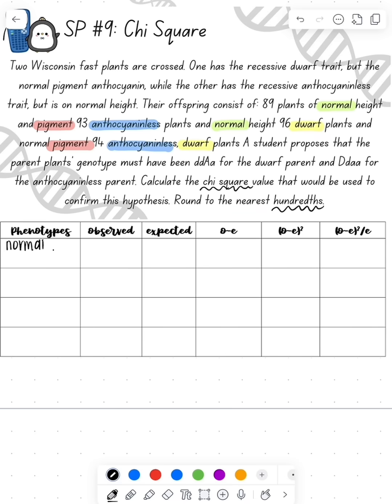So you're going to fill in your different phenotypes. So normal pigmented, normal with no pigment, dwarf pigmented, and dwarf with no pigment.